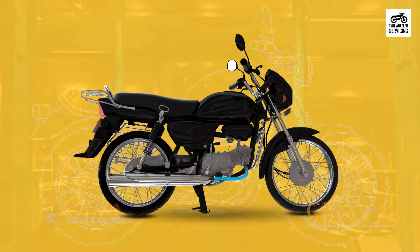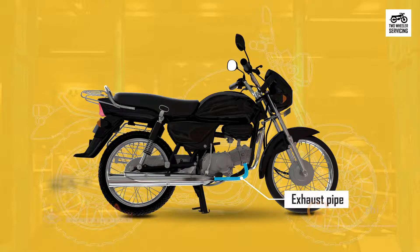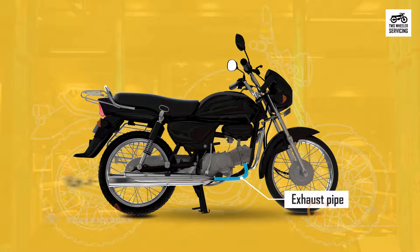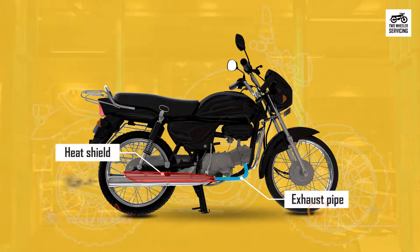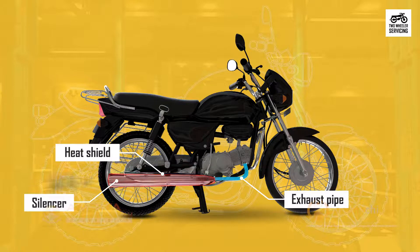As fuel is burnt, it produces fumes and gases which move outwards through the exhaust pipe. The fumes and gases create a lot of heat, which may harm the co-passenger on the bike. This is avoided with the help of a heat shield. The sound of the engine is muffled using a silencer attached to the end of the exhaust pipe.